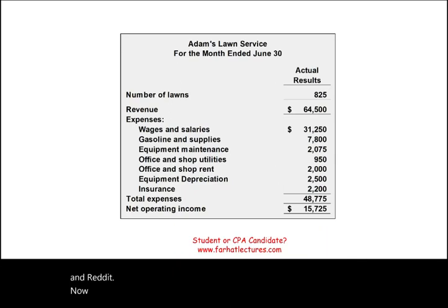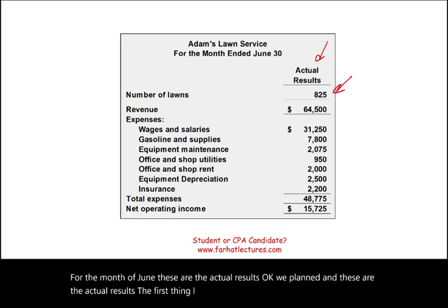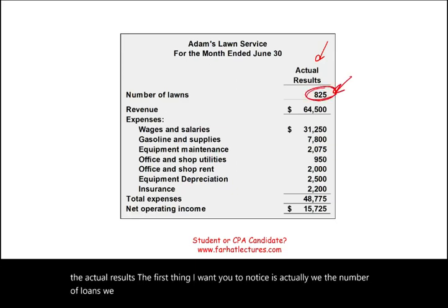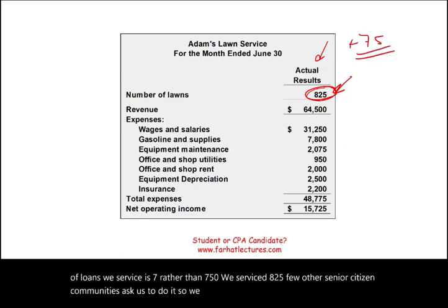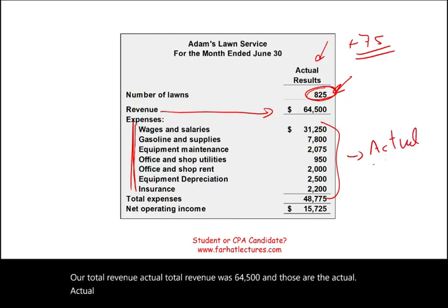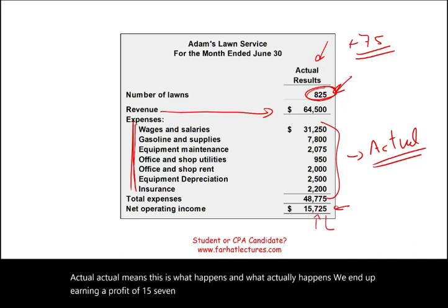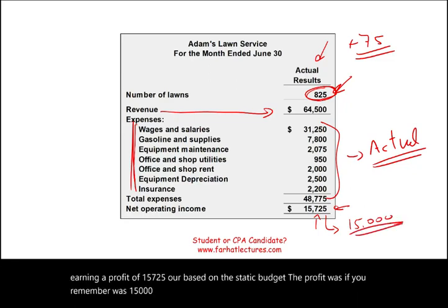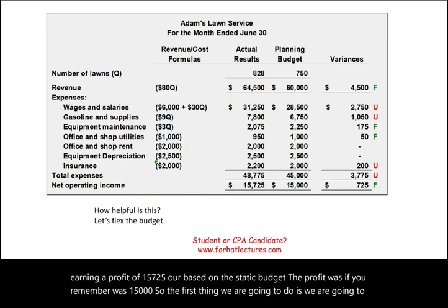For the month of June, these are the actual results. The first thing to notice is we actually serviced 825 loans rather than the planned 750 — 75 more, because a few other senior citizen communities asked us to help. Our actual total revenue was $64,500. What actually happened is we ended up earning a profit of $15,725. Based on the static budget, the planned profit was $15,000. So now we're going to compare the planning budget to the actual results.